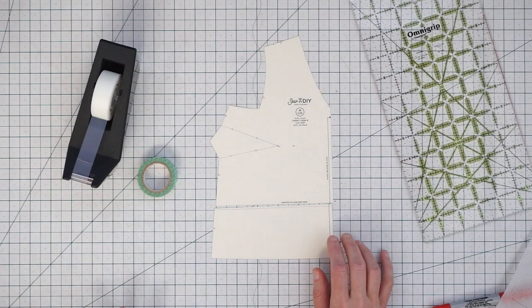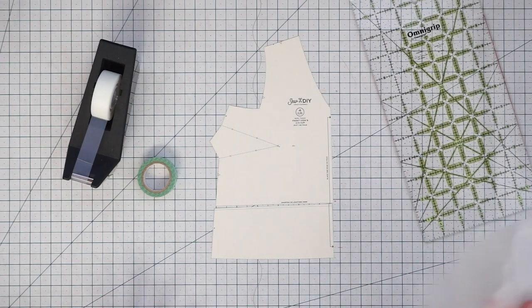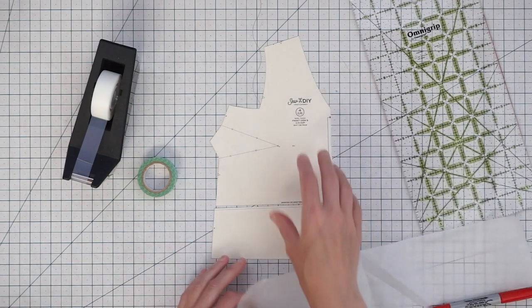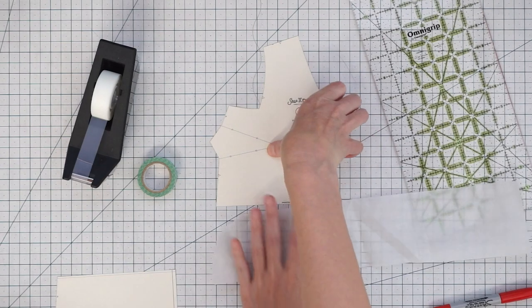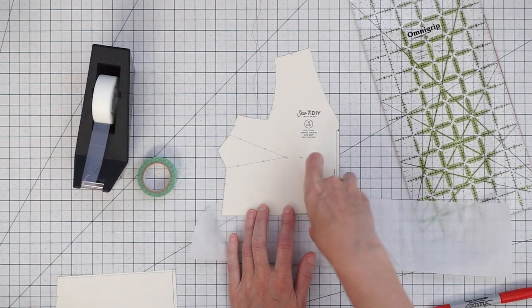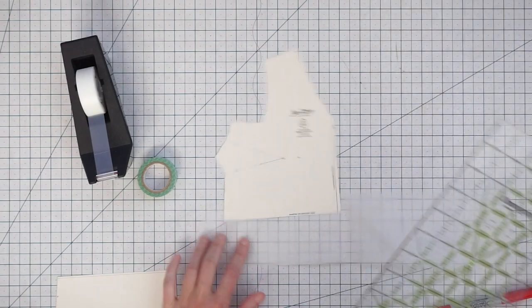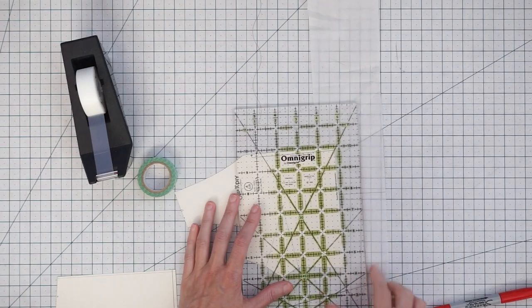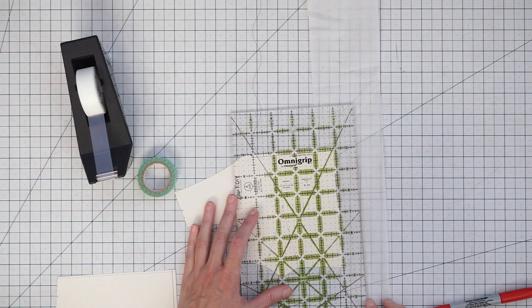Now if you want to lengthen your pattern you want to grab your little scrap of paper and put it underneath the pattern and then we're just going to tape it in place, and then we want to use our ruler to make a guide that will show how much we are lengthening.